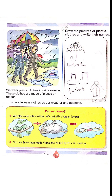In the rainy season we wear plastic clothes. These clothes are made up of plastic and rubber. Thus people wear clothes as per the weather and seasons.